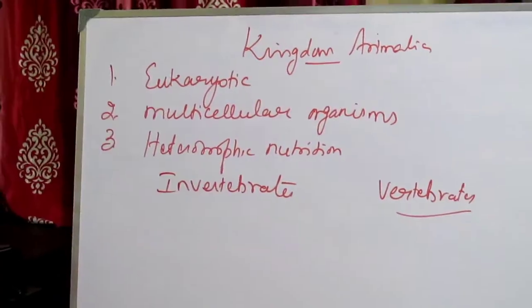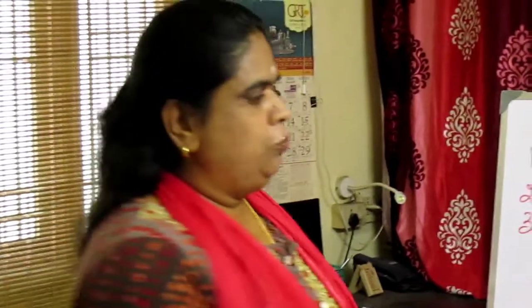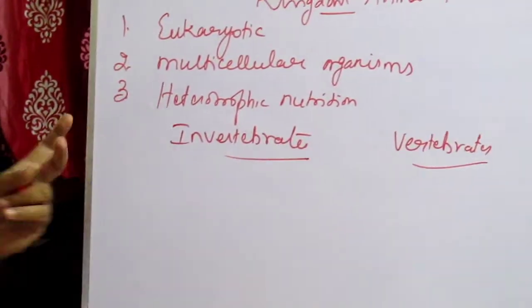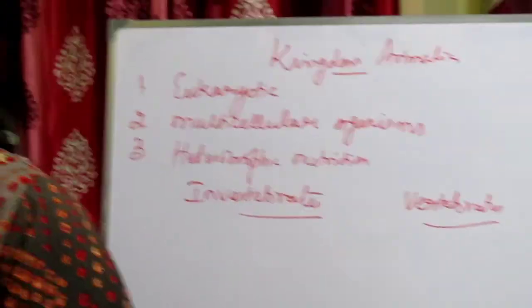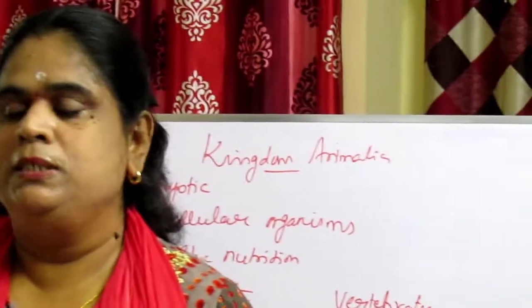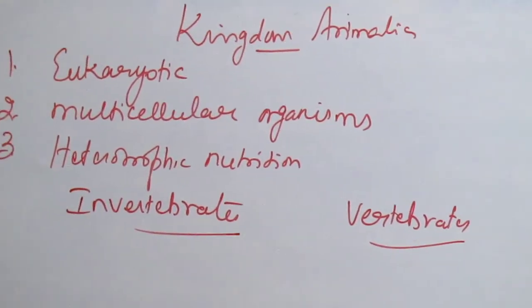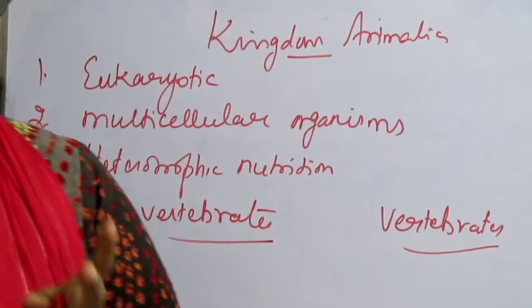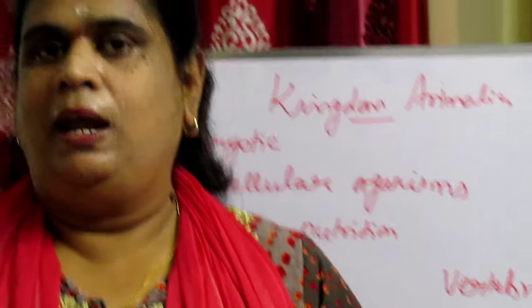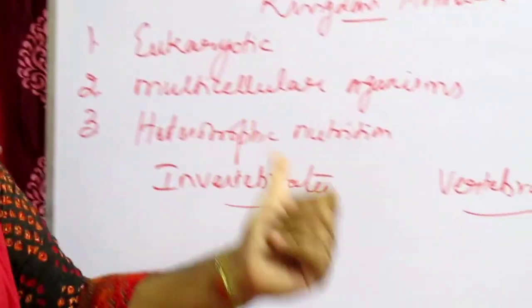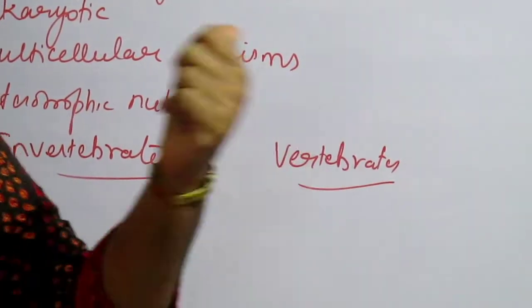Invertebrates do not have a backbone, while vertebrates have a backbone. As already mentioned, 99% of animals are invertebrates. The remaining represent vertebrates, animals with a backbone. On the basis of the presence or absence of a notochord, animals may be categorized into two groups: non-chordates, which are invertebrates, and chordates, which are vertebrates.